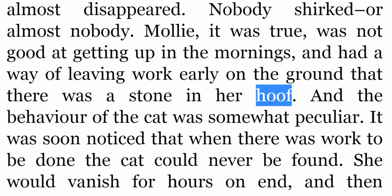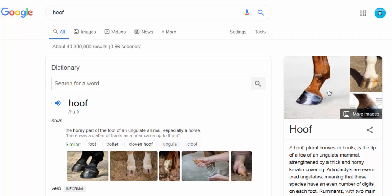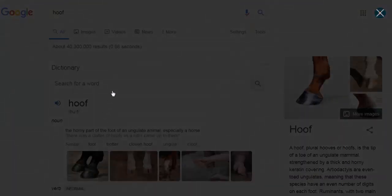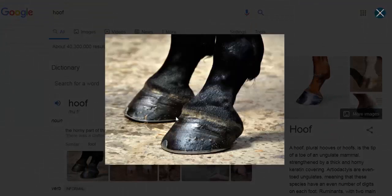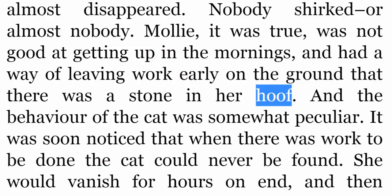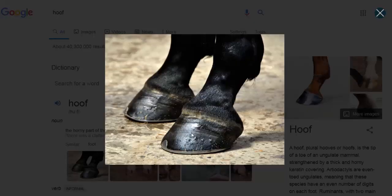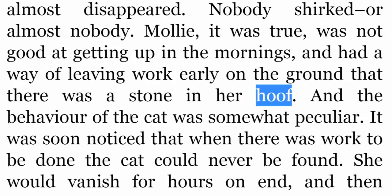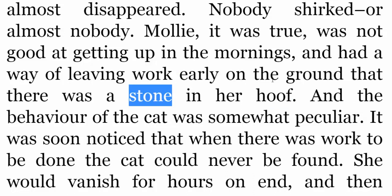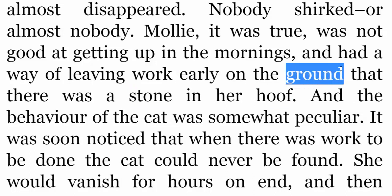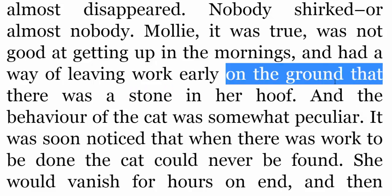Hoof هو الحافر — حافر الحصان. هذه are hoofs. فهي كانت تدّعي بأن there is a stone in her hoof. Stone — حجر. وكلمة ground تعني الأرض، لكنها تعني كذلك السبب — on the ground that there was a stone in her hoof.